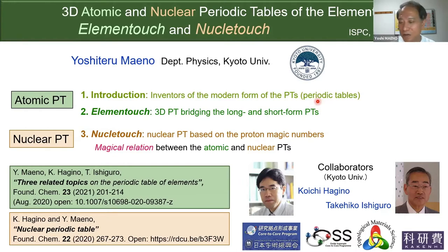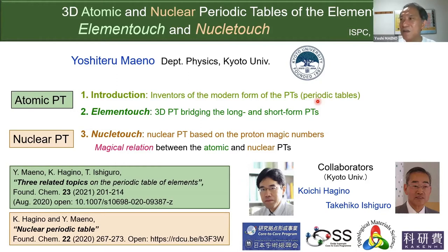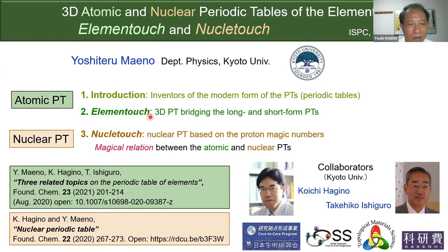I'm not sure I can tell you about the philosophy of chemistry, but I can give you my view on periodic tables today. I'll talk about a three-dimensional atomic and nuclear periodic table of the elements. After the introduction, I'll cover the three-dimensional periodic table bridging the long and short form, and then the nuclear periodic table based on proton magic numbers.